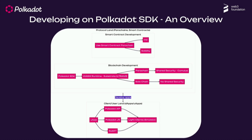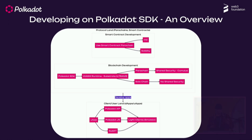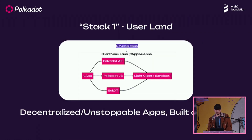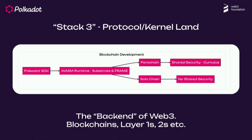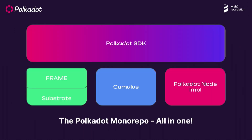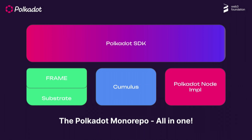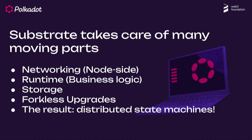Now let's get into the meat of it — the Polkadot SDK. You can look at it as three different stacks: user land (just dApps), the second stack of smart contracts as the middleware of Web3, and then protocol or kernel land — the back end of Web3, covering layer twos, layer ones, layer zeros, and meta protocols. The Polkadot SDK is now in a single monorepo with all the tools you need to build all of these things.